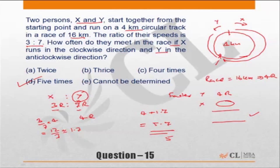Please remember the basic condition: if they are running in opposite directions, they would meet when they have cumulatively done one round. So if they have cumulatively done three rounds, they would have met three times.